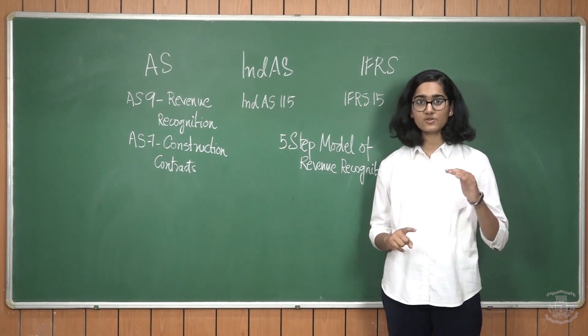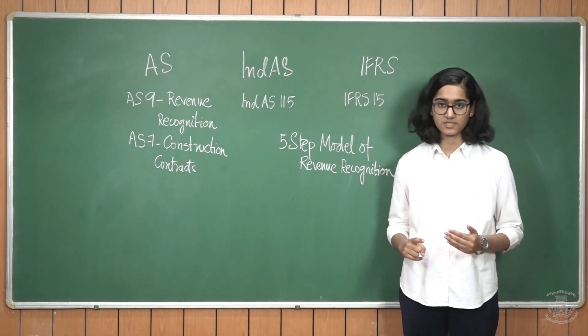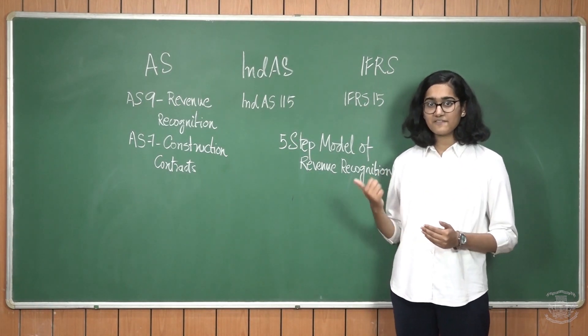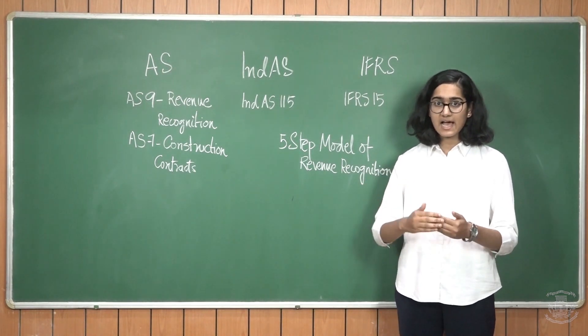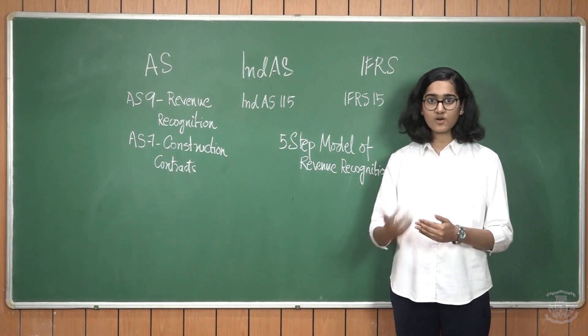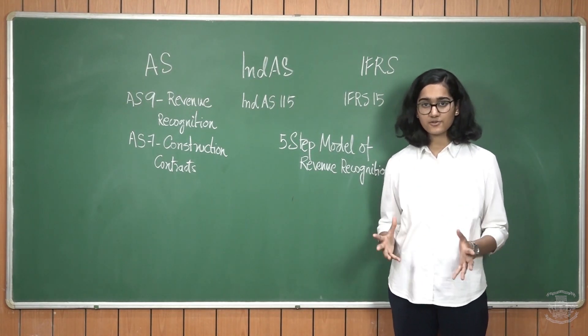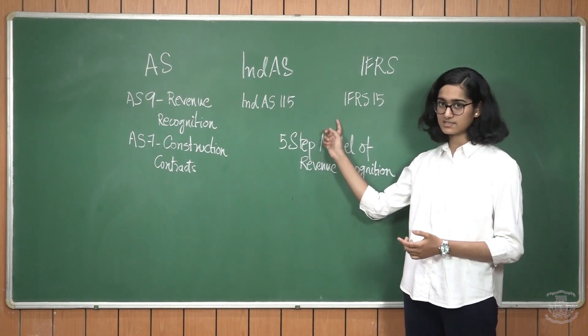Step number one states that we need to identify contracts with customers. This means that revenue will be recognized only if the contract that you're entering into has the counterparty to be a customer. If it's not a customer, then the whole revenue recognition does not fall under this standard.